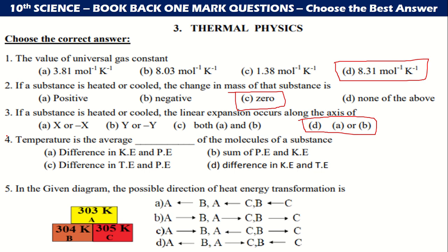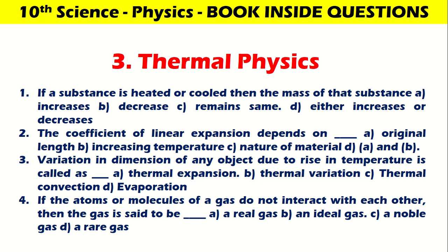Temperature is the average kinetic energy of the molecule of a substance. So the difference in KE and PE, potential energy and kinetic energy. In the given diagram, the possible direction of heat transformation is A to B. If a substance is heated or cooled, then the mass of the substance remains same, the correct answer.